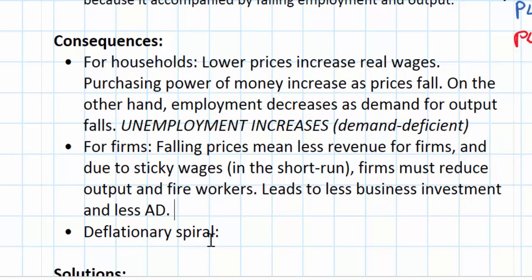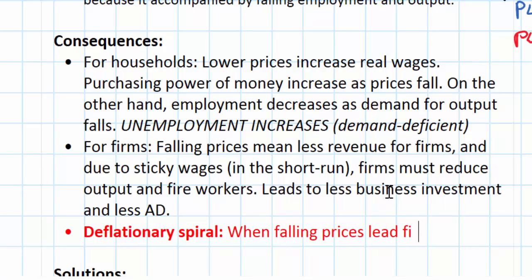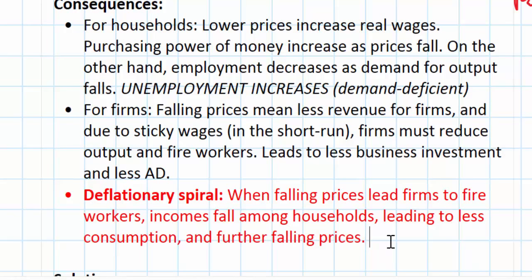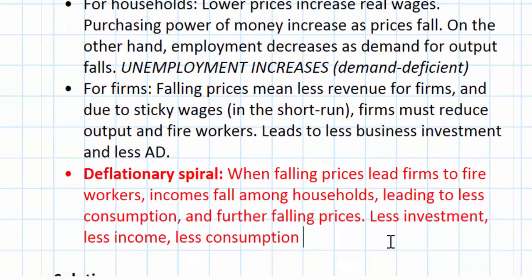And that brings us to what we call a deflationary spiral. Perhaps one of the worst things that a nation can experience is a deflationary spiral. When falling prices lead firms to fire workers, incomes fall among households, leading to less consumption and further falling prices. All of this leads to less investment, less income, less consumption, and falling prices.